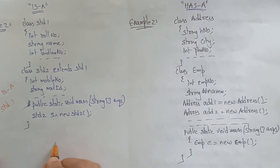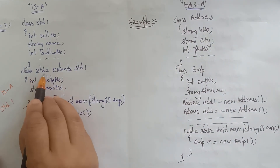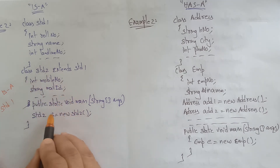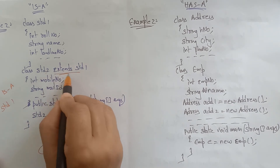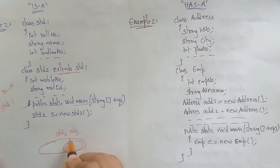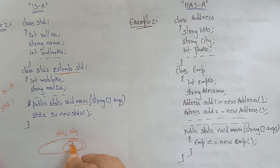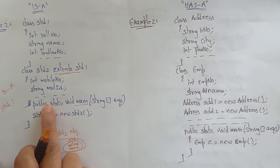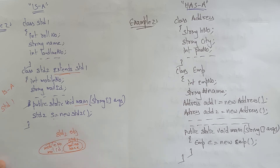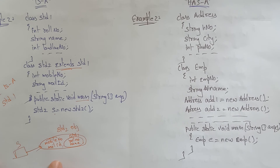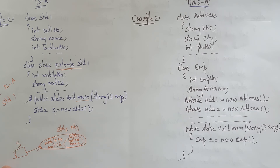When the Student2 object is created and Student2 extends Student1, Student1 is also occupied. Student1 contains role number, name, and landline; Student2 adds mobile number and mail ID. All are referred to with a single reference. So Student2 is having an 'is-a' relationship with Student1.